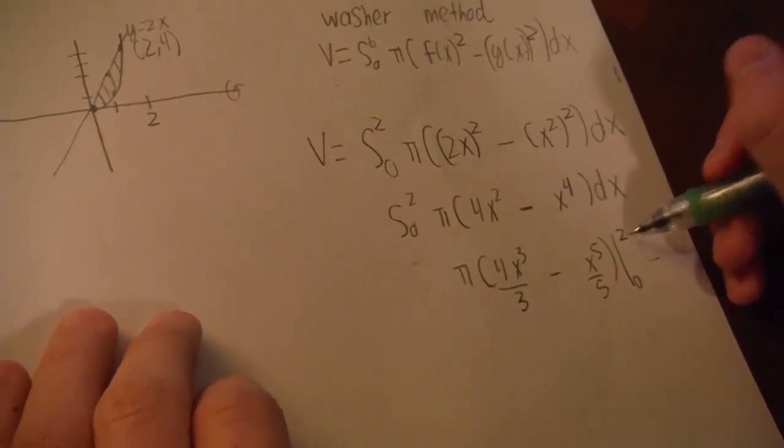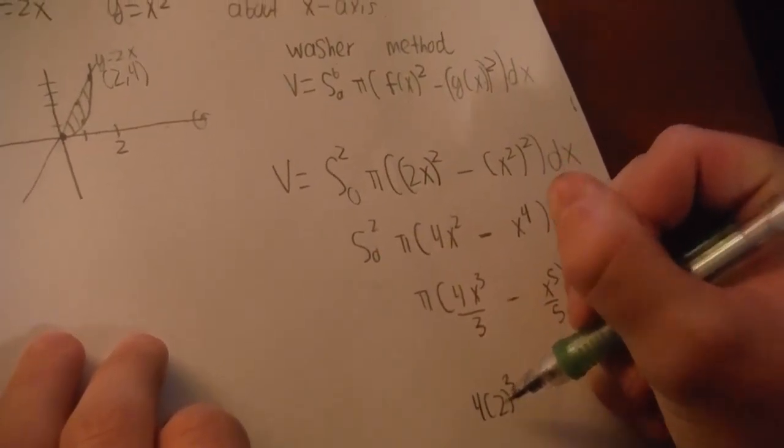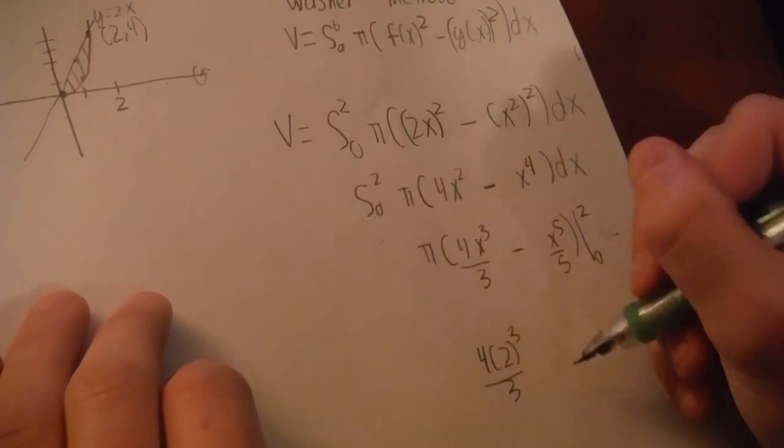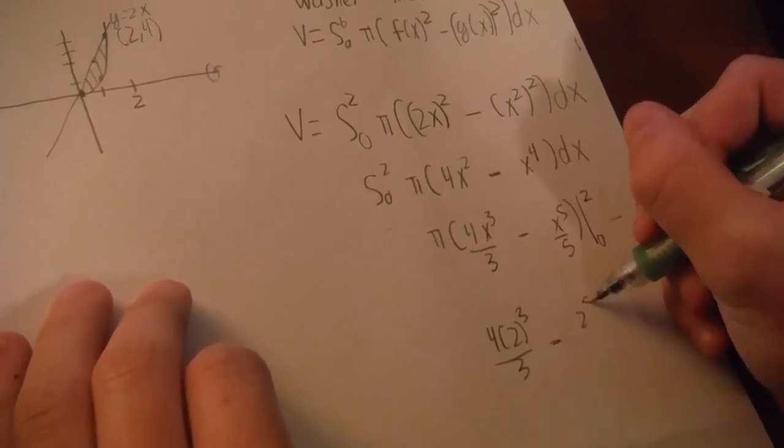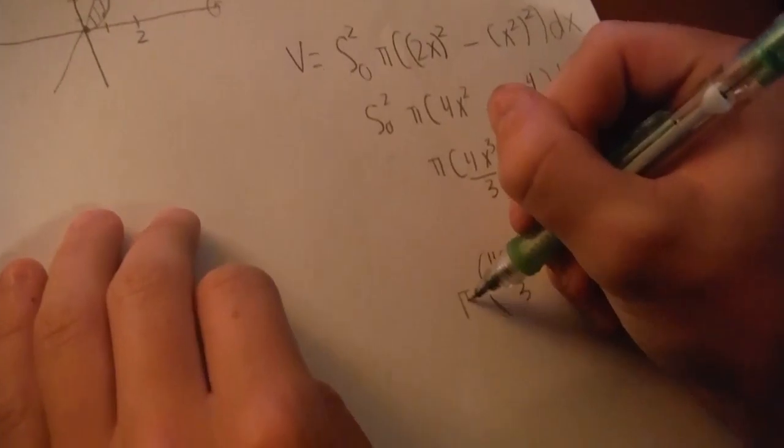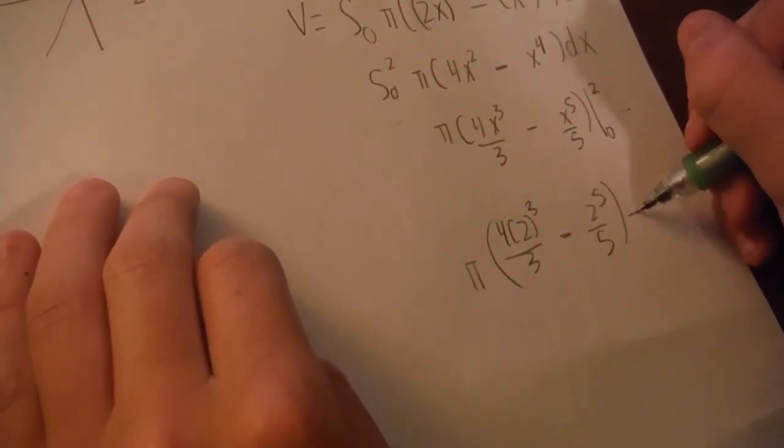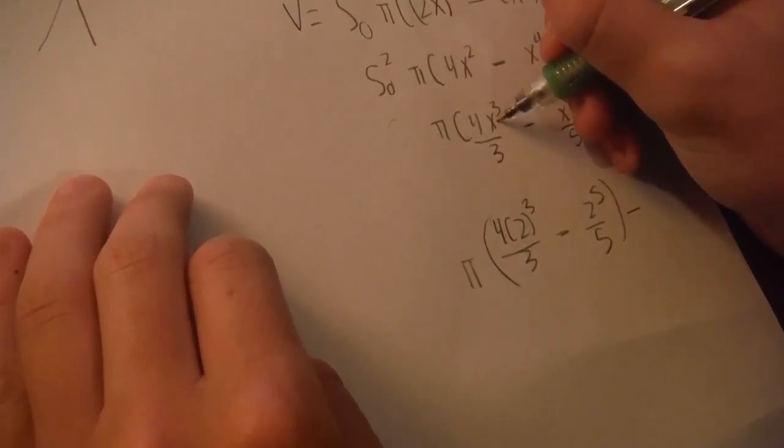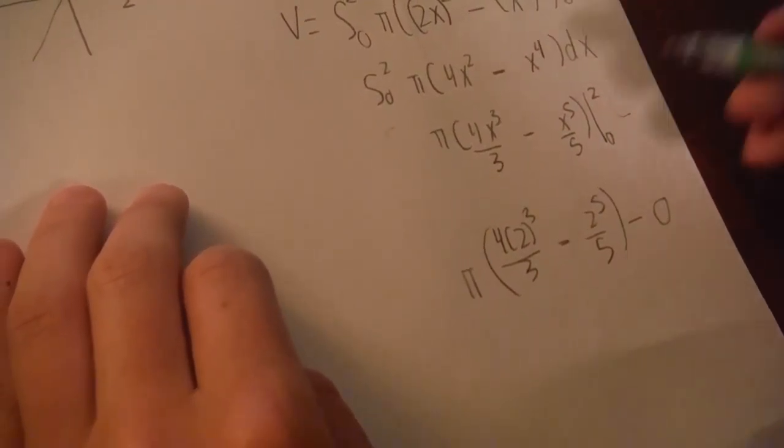Because we're evaluating the integral, the c is irrelevant, so we're evaluating this from 0 to 2. Now, plugging in 2, this is 4 times 2 cubed over 3 minus 2 to the 5th over 5 times pi.